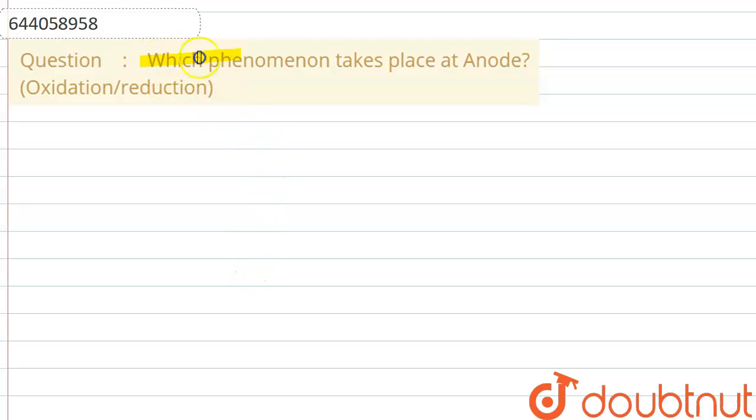Let me explain it to you. Which phenomena takes place at the anode - oxidation or reduction? So first of all, we will talk about the electrolytic cell. In the case of an electrolytic cell, what exactly is the anode?